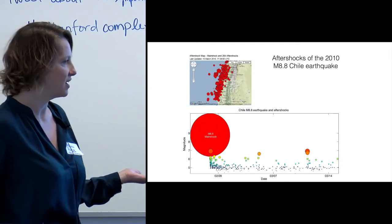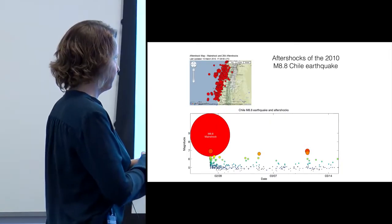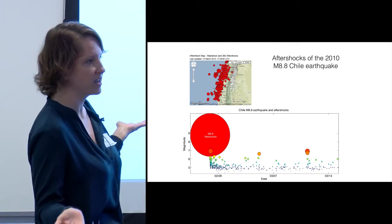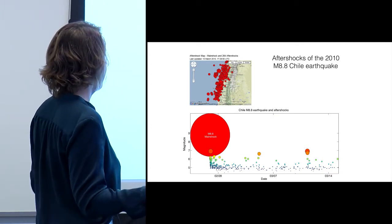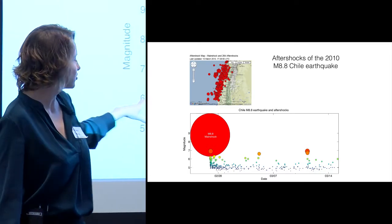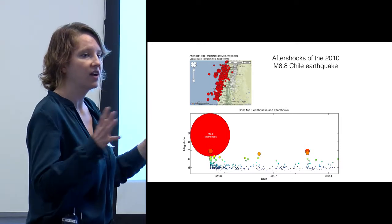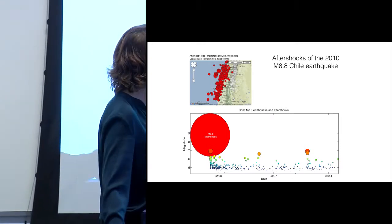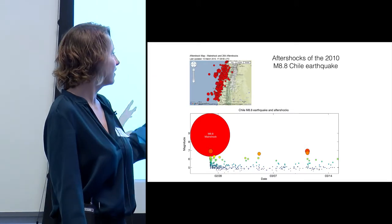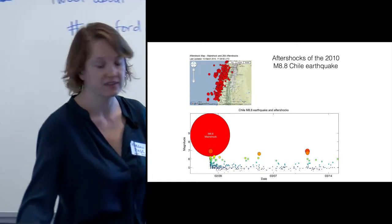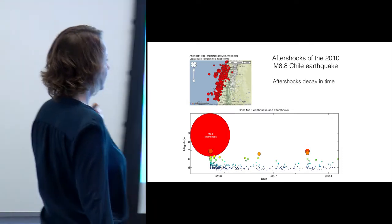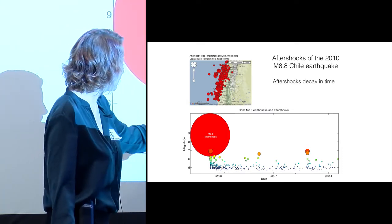You can see all of these scaling laws very easily if you just look at maps and figures of aftershock sequences around the world. This is an example showing the magnitude 8.8 earthquake that hit along the subduction zone in Chile in 2010. The top is a map of the aftershocks. I've scaled the circles to go with the amount of fault area that ruptured in each earthquake. The bottom figure shows in linear time all of the aftershocks, colored by how big they are, and you can see that aftershocks decay in time.